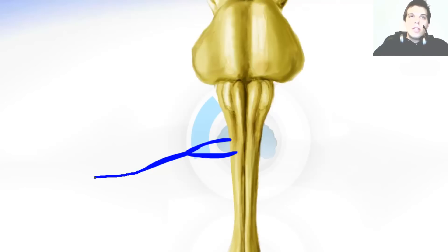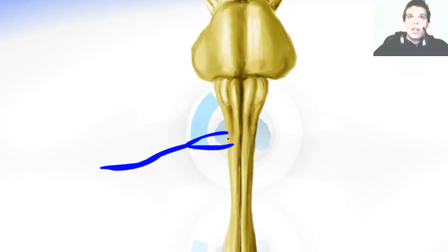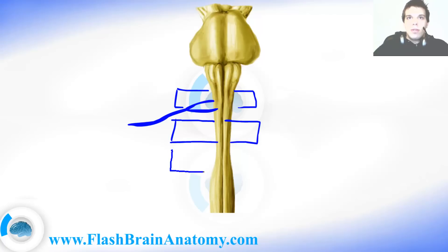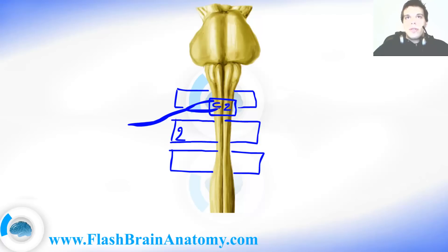The place where the spinal nerve exits the vertebral column is used to give the spinal cord segment names. For example, here we have the vertebrae — the bones — enclosing the spinal cord from all sides. If this spinal nerve leaves the vertebral column above the second vertebra, then we name this segment of the spinal cord C2. C stands for cervical, and 2 describes that the spinal nerve from this segment leaves the vertebral column above the second vertebra.